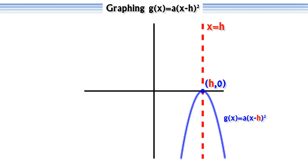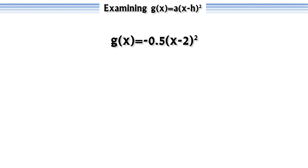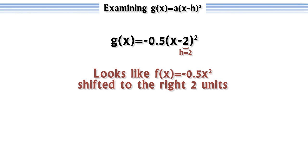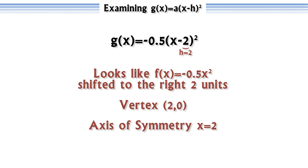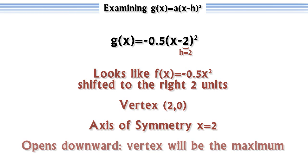Another convenient thing is we don't need to graph functions of this form to identify their important qualities. Examining g(x) = -0.5(x - 2)² without graphing, we see that h equals 2, so it will look just like f(x) = -0.5x², but shifted to the right 2 units. Its vertex must be located at (2, 0), and its axis of symmetry will be x = 2. And lastly, since a is negative, the parabola opens downward, so it will obtain its maximum value at the vertex.